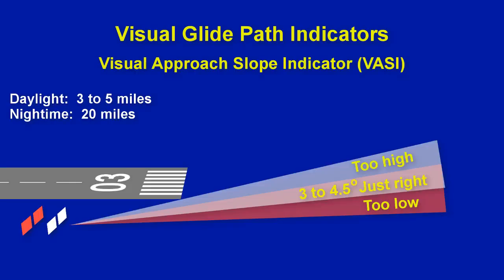Let's talk about visual glide path indicators. The visual approach slope indicator, or VASI, can be seen during daylight about 3 to 5 miles away and at night about 20 miles away. It is usually set with a 3-degree glide slope, but it might be up to 4.5 degrees.